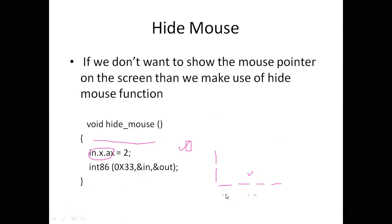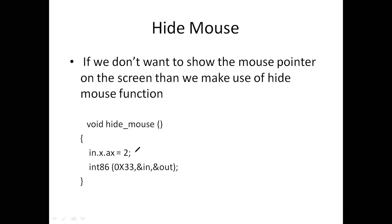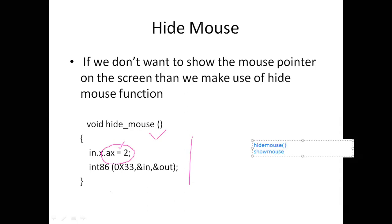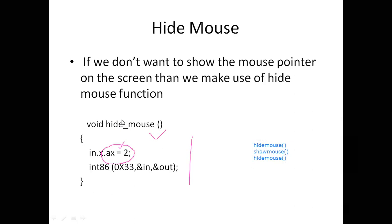If we do not want to show the mouse pointer on the screen, we use the hide_mouse function. Whenever we use the service AX=2, the mouse pointer is hidden. Once defined, you can call hide_mouse() and show_mouse() as many times as needed — multiple times in the program wherever required.